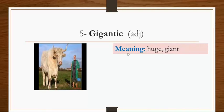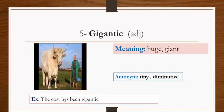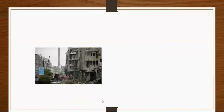If you look at this picture, you'll find a huge bull, a huge male cow. It's called gigantic. It's mainly an adjective meaning huge or giant. The antonym is tiny or diminutive, meaning very small in size. Example: The cost has been gigantic.